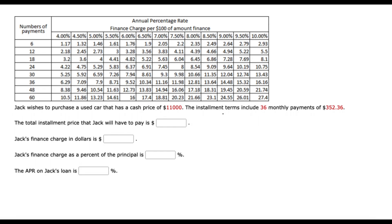So the bank is going to offer him 36 monthly payments of $352.36 per payment.